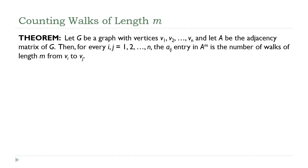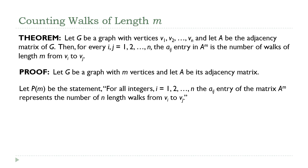So how are we going to prove this? Well first, I'm going to just start off with the obvious beginning. I'm going to start with a graph, and I'm going to assume it has m vertices, and A is going to be its adjacency matrix. Then I'm going to define this statement. I'm going to let P(m) be the statement for all integers i equals 1, 2 out to n. The A sub ij entry of matrix A to the m represents the number of m length walks between the ij vertices. In case you didn't guess, we're going to do this proof by induction on the length of the walk.